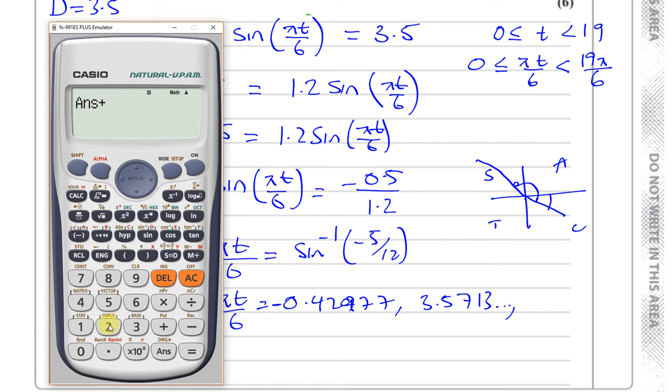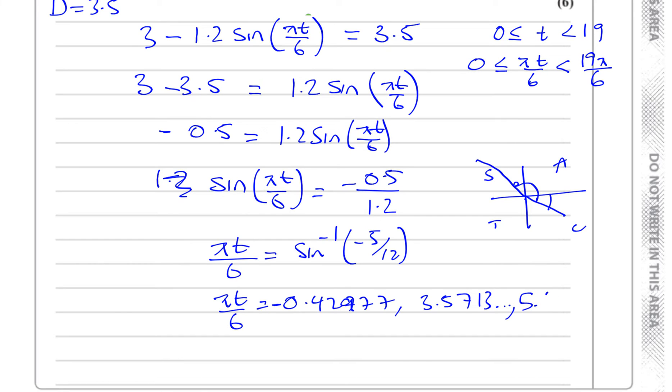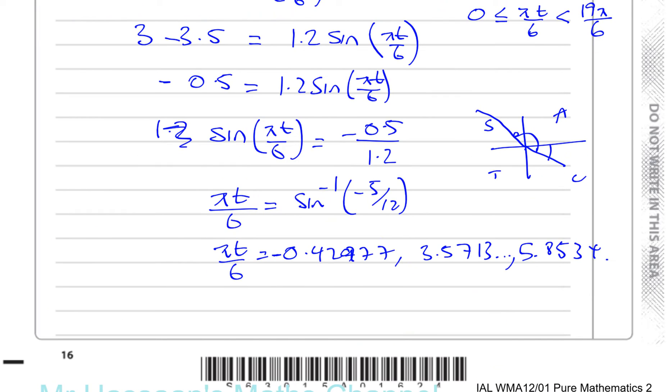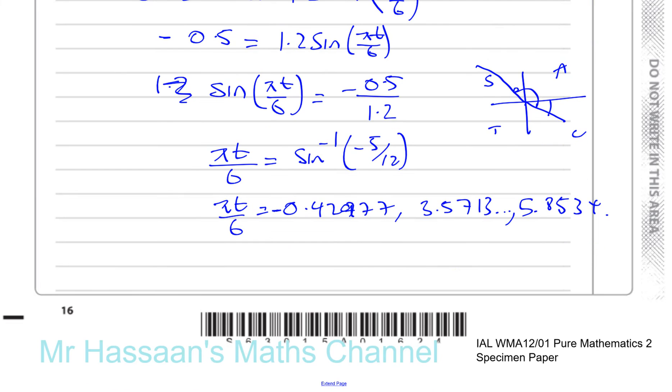So we've got to now take our original value and add to it 360. I already stored it under A. So I'm going to add 360 but in radians, which is 2 pi. So that gives me 5.8534. There we have these.